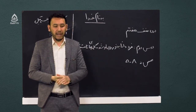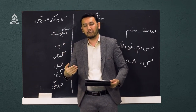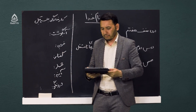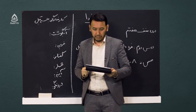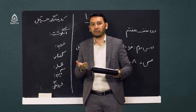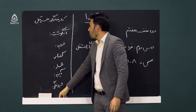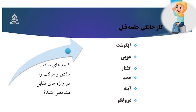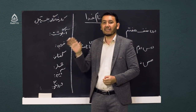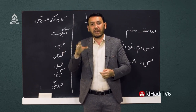قبل از اینکه وارد بحث جدید شویم، یک نگاه می‌اندازیم به کار خانگی جلسه قبل. میخواهیم آن را حل کنیم و جواب سوالات را بدهیم. در جلسه قبل یک کار خانگی خدمت‌تان سپردیم و گفتیم که کلمه‌های ساده، مشتق و مرکب را در واژه‌های مشخص‌شده بیان کنید. واژه‌ها عبارت بودند از: آبگوشت، خوبی، گفتار، هم، آینه، دروغگو.